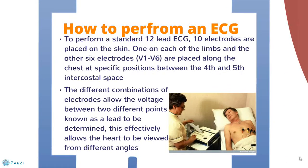To perform a 12 lead ECG, 10 electrodes must be placed on the skin, one electrode on the right and left arm and one on the right and left leg. The other 6 electrodes, V1-6, are placed along the chest in specific positions between the 4th and 5th intercostal space.